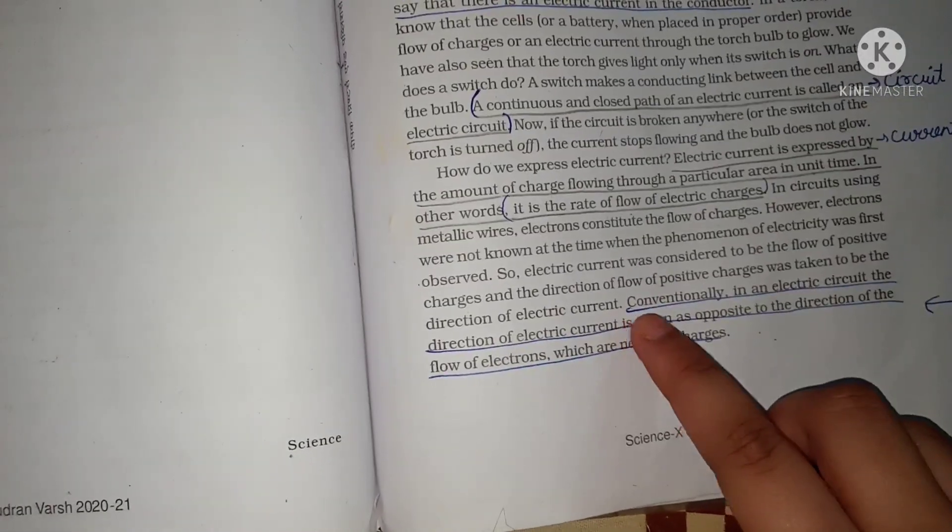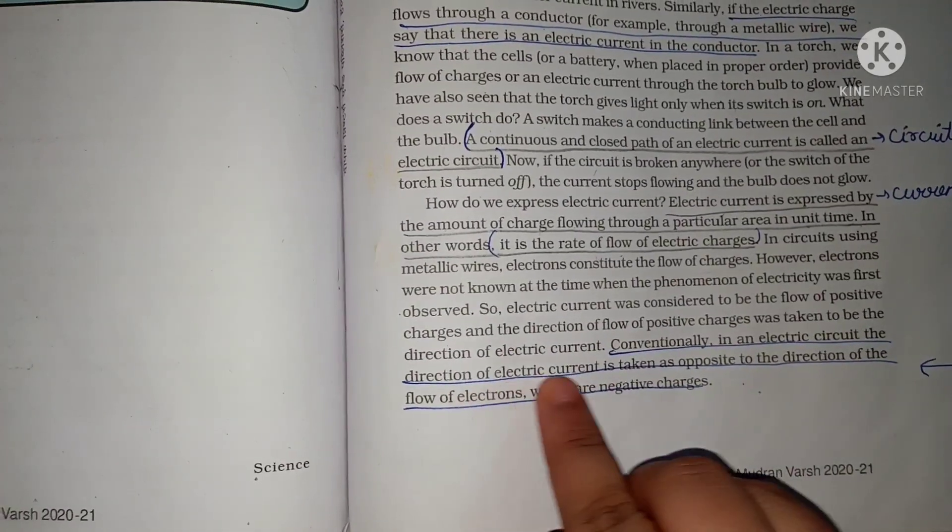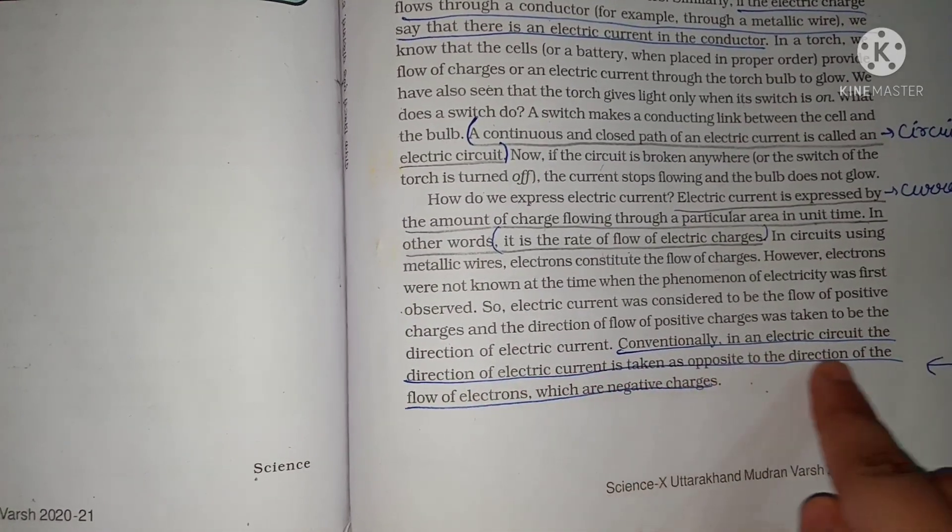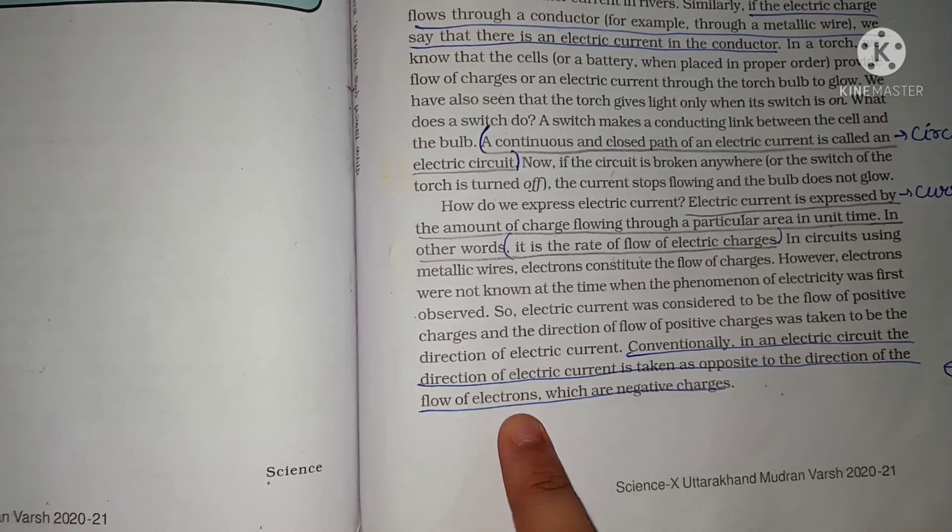This was also important. Conventionally, in an electric circuit, the direction of electric current is taken as opposed to the direction of the flow of electrons, which are negative charges.